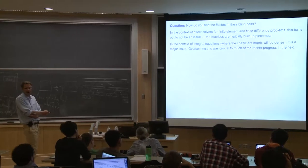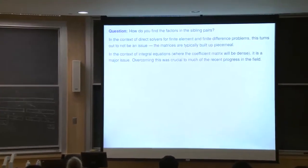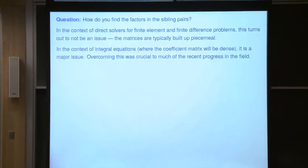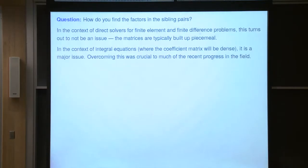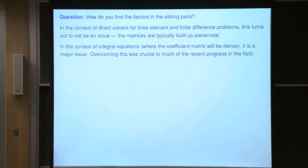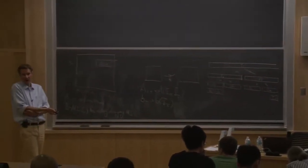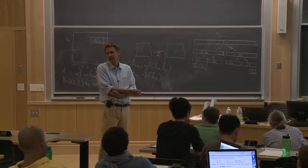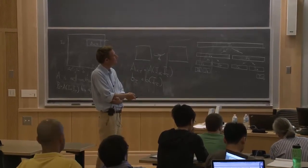I'm not going to talk today about how to actually find the factors for the sibling pairs — that's really where a lot of the meat in these algorithms is. It's context dependent. On Wednesday we'll talk about direct solvers for sparse matrices where I build these matrices up little by little. When dealing with integral equations you're given a big dense matrix, and computing all low-rank representations without forming the full N-by-N matrix is a major bottleneck.